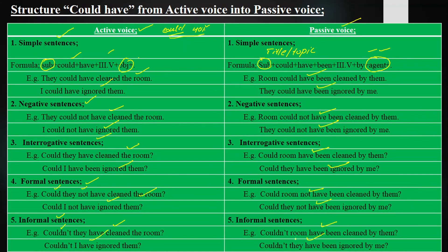So these are the sentences of 'could have plus third form' from active voice into passive voice. Hope you got today's lecture. Please subscribe the channel and press the bell icon for more videos. See you next time with the next lecture. Goodbye.